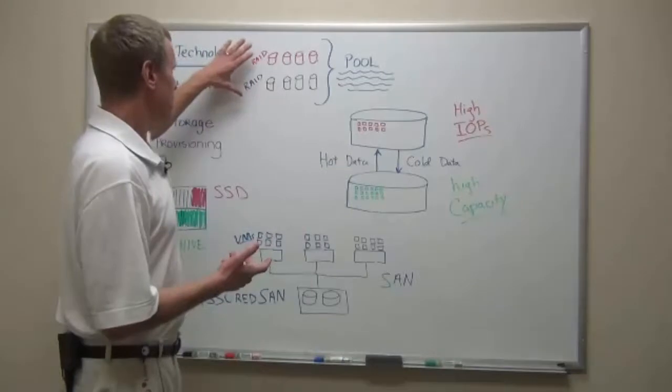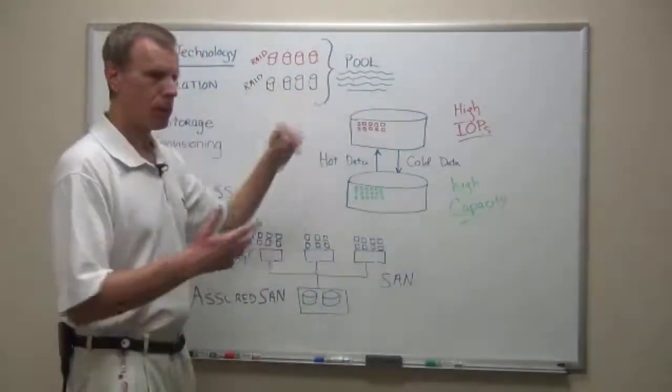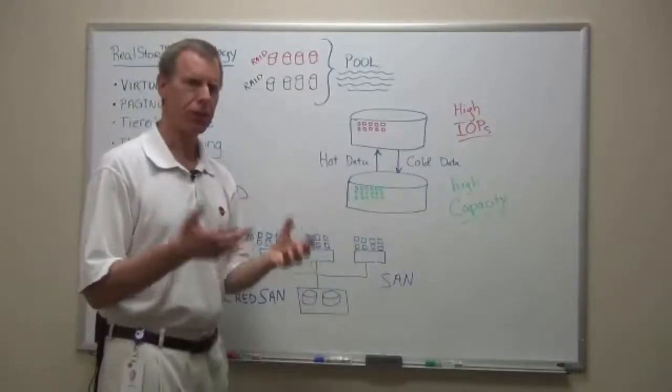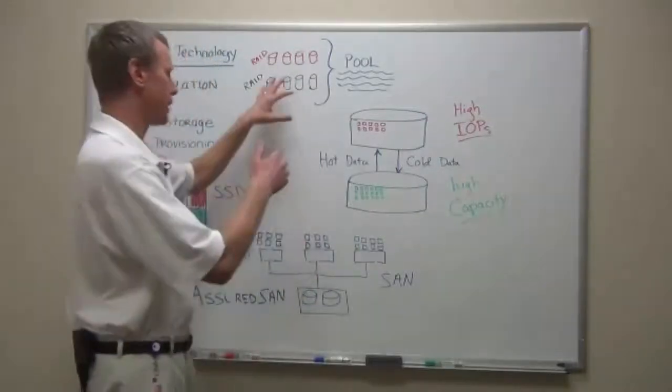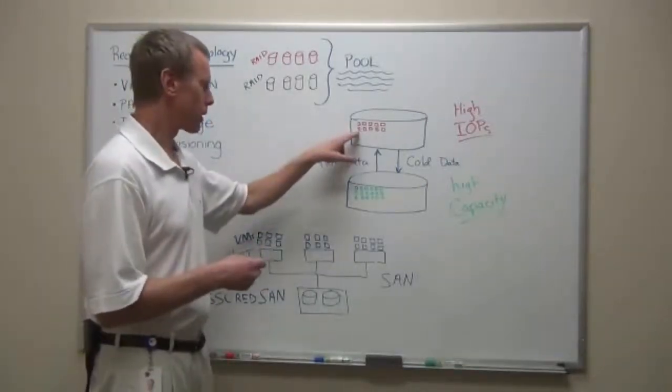So the concept is to take all of these RAID groups and to pool them all together. And so what you're creating is a new address space. There's a new address space that sits on top of these things that will give different addresses to these storage blocks.